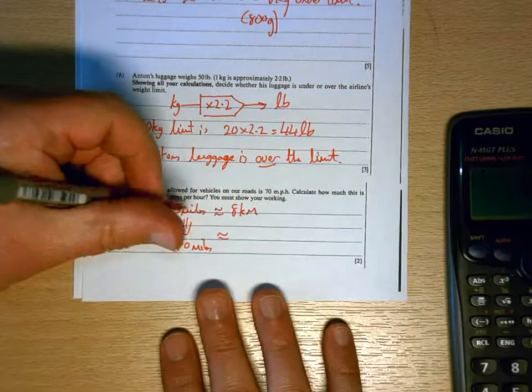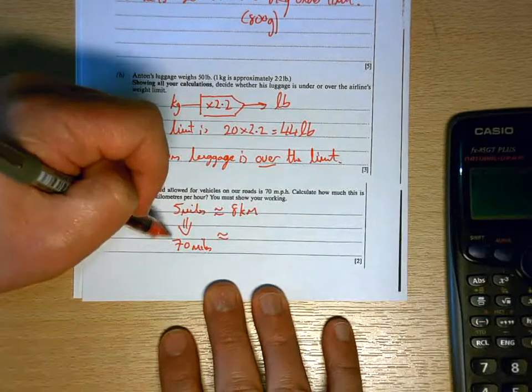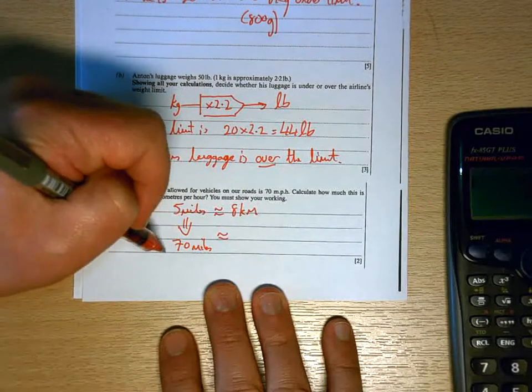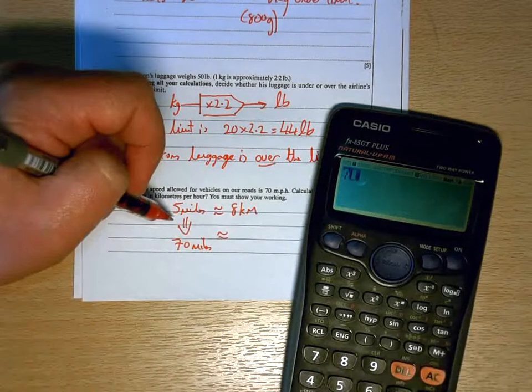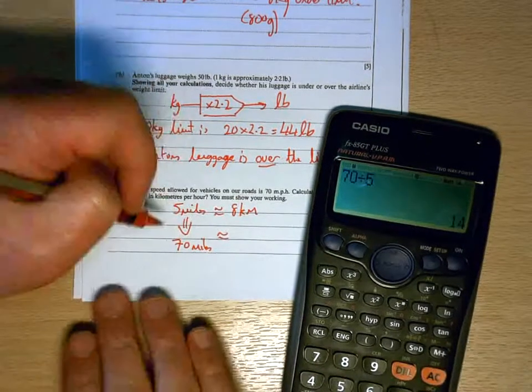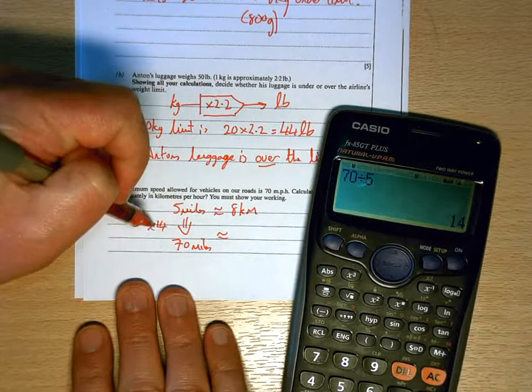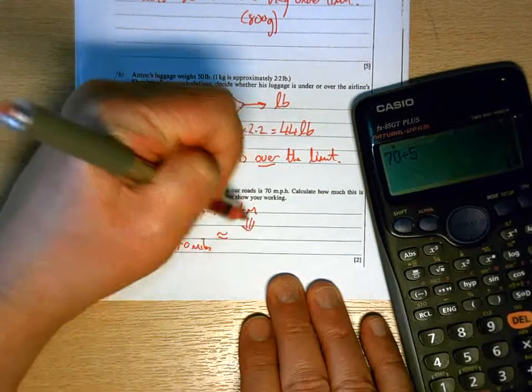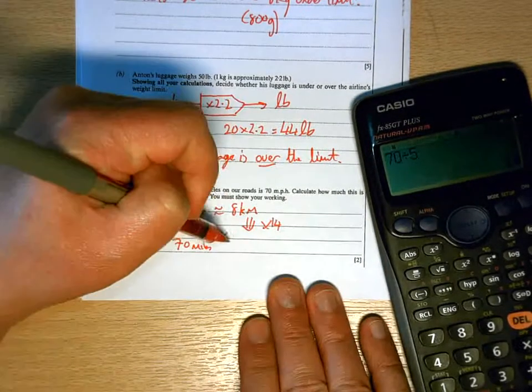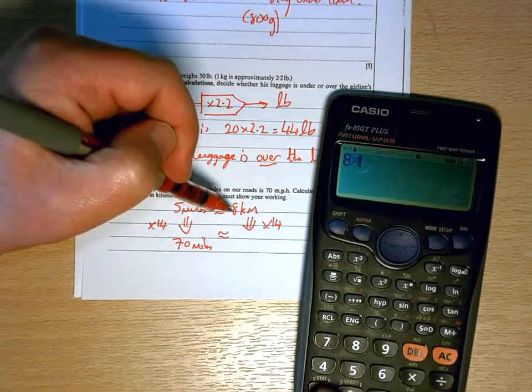And what that means now is that we have to turn five miles into 70 miles, and the way that we do that is by multiplying by 70 divided by 5, which is 14. Okay, if we take five miles multiplied by 14, we get 70. So that means if we do exactly the same with kilometers, it will give us what we need there. So if we do 8 times 14, we get 112 kilometers.